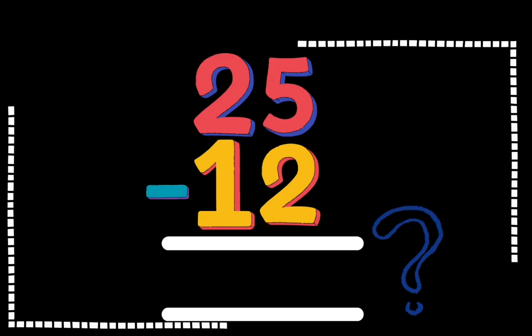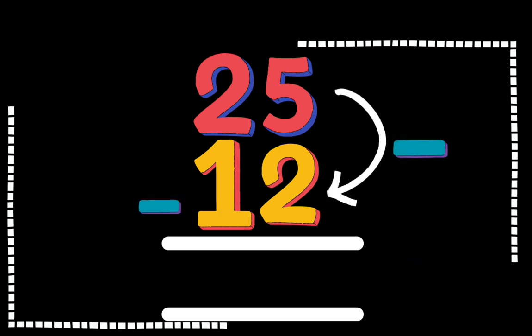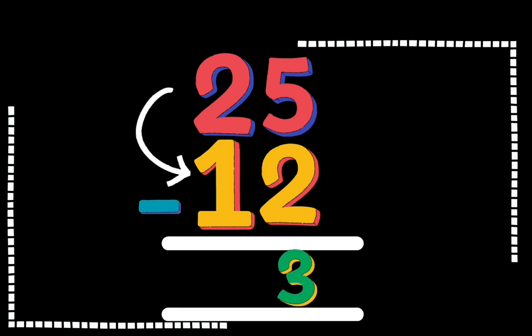25 minus 12 is equal to what? 5 minus 2 is equal to 3. 2 minus 1 is equal to 1. So the answer is 13 by subtracting 25 and 12.